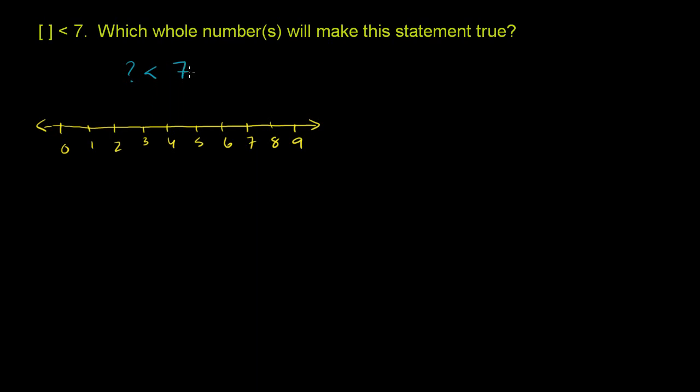So what numbers satisfy that? Well, anything below 7, any whole number below 7. So if we look at 7 on the number line, what are all of the whole numbers below 7 that are less than 7? Well, we have 6, we have 5, we have 4, 3, 2, 1, or 0.